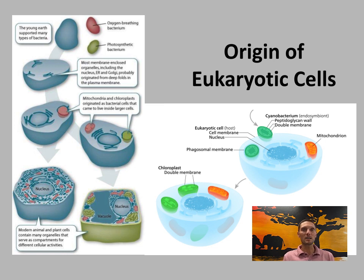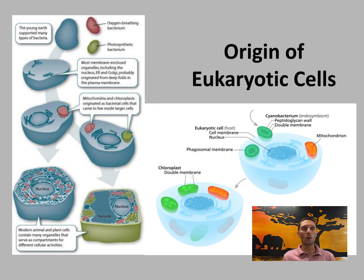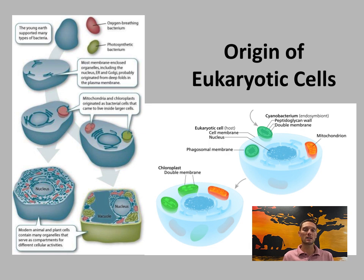While this cannot be completely proven, there is significant supporting evidence. Mitochondria has a double membrane, as does the chloroplast — another example of endosymbiosis. Both have their own DNA in a circular molecule, much like modern prokaryotes. They can transcribe their own genes and synthesize their own proteins. They have 70S ribosomes, a characteristic of prokaryotic cells, and they divide from pre-existing cells.